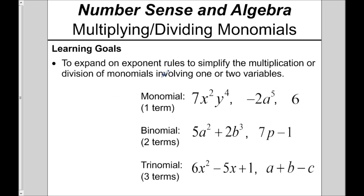So what is a monomial? A monomial is basically an expression that has one term. A term is an expression that has things multiplying or dividing with each other. For example, 7, x squared, and y to the 4 are just multiplying together. The 6 can be thought of as multiplying with a 1. So things that are just multiplying or dividing together make one term, and this is a monomial because there's only one of these terms.